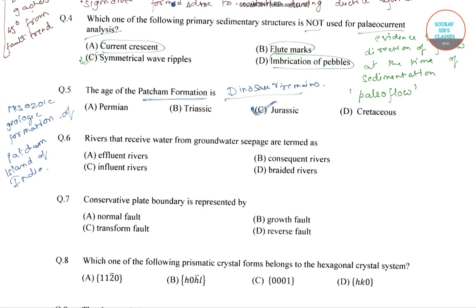In the next question, we have: the rivers that receive water from groundwater seepage are termed as? The correct answer is option A — affluent rivers — because affluent rivers are streams which get their water from groundwater.